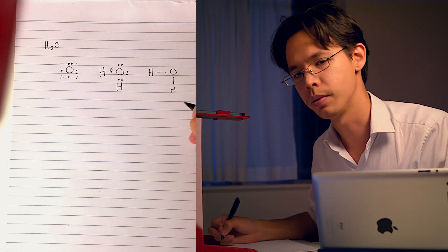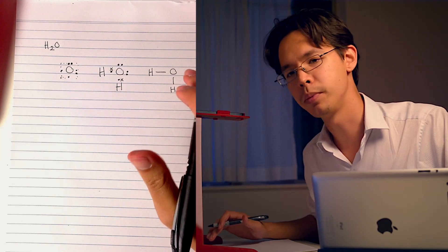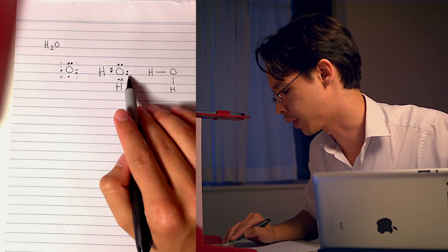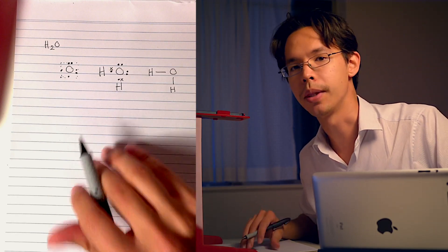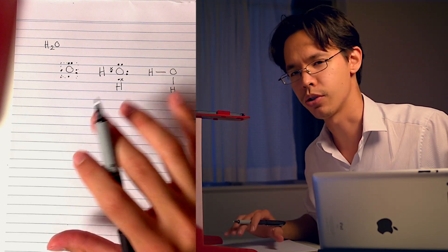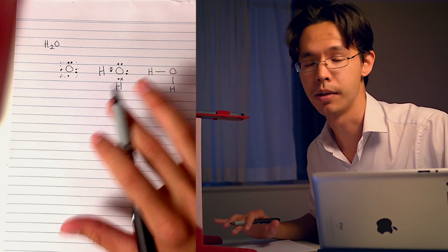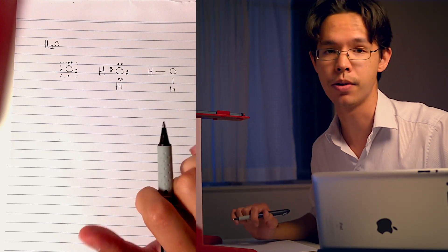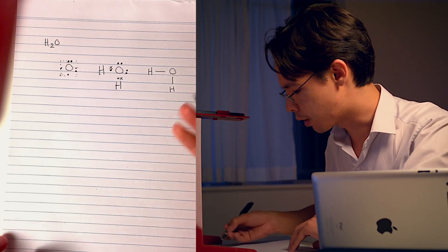When you draw the structural form structure, you normally leave the lone pairs of electrons - you omit them. But for some cases you want to put them there just so you can work out their three-dimensional shape.